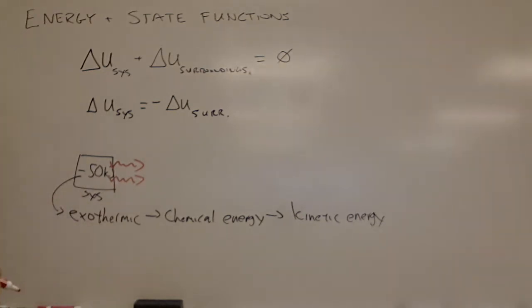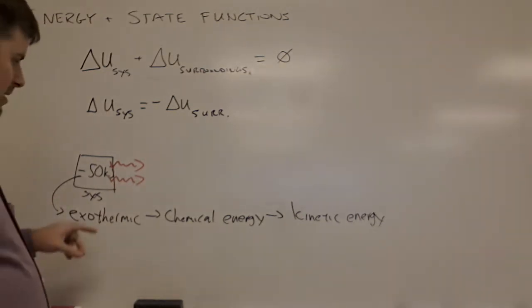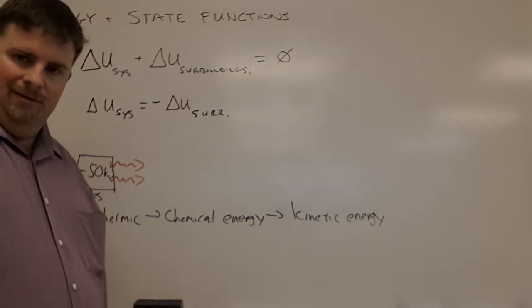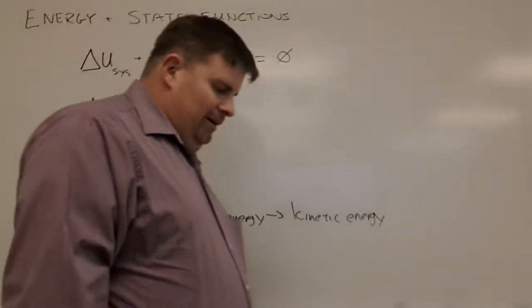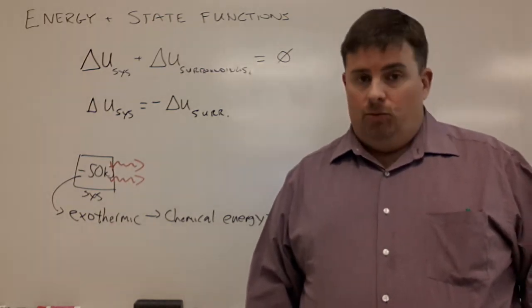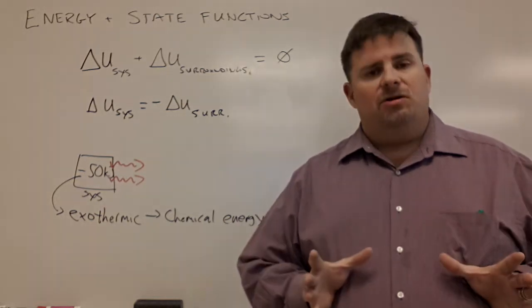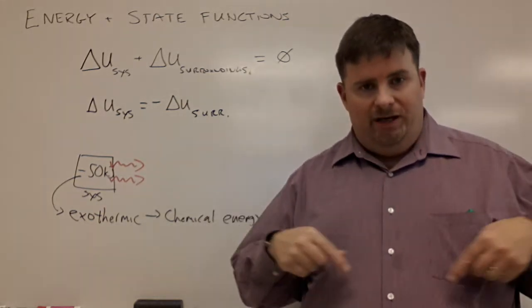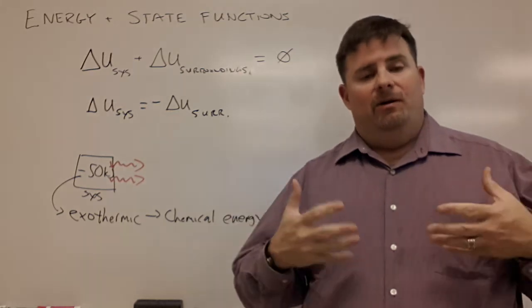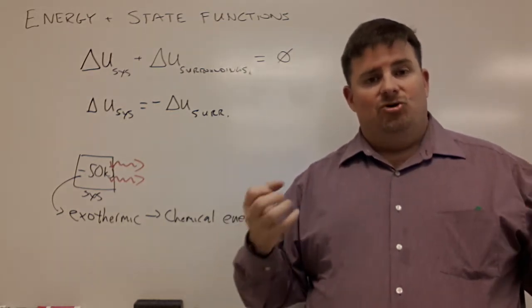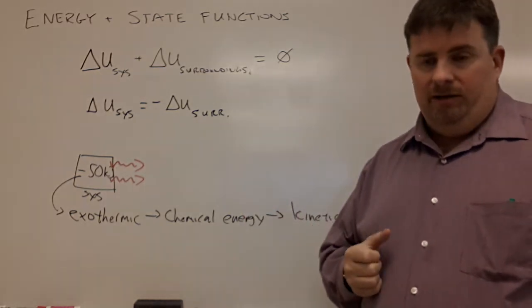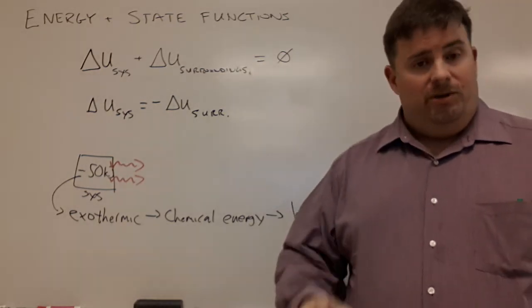There's a change in energy from the system to the surroundings, and the surroundings absorb that energy. For example, a fire in a room releases energy into the surrounding air, making the room warmer. The system is exothermic and the surroundings absorb that energy — that's why this relationship is important.